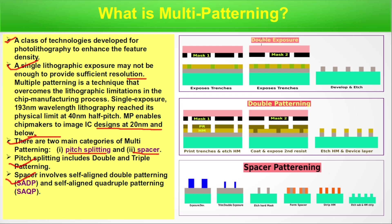There are two main categories of multi-patterning: pitch splitting and spacer. Pitch splitting includes double and triple patterning, and spacer involves self-aligned double patterning and self-aligned quadruple patterning. In pitch splitting, a single layer is not transferred in one go due to wavelength limitations — it is transferred in multiple steps. Using a first mask, a first set of exposed areas is defined; then a second mask exposes another set of areas and patterns are transferred, resulting in the final pattern on the wafer. This is double exposure.